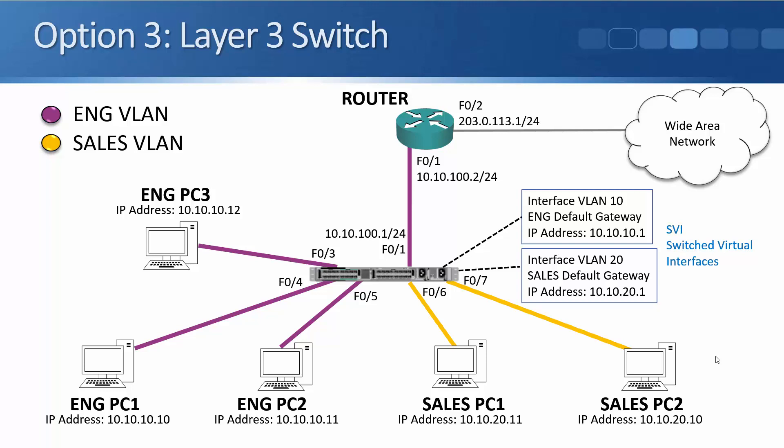With the first two options we covered, an external router was used. With this option, we're going to do the routing on the switch itself. To do that, you can't use a lower-end layer 2 only switch — it has to be a layer 3 switch capable of doing routing. When you have that, the switch doesn't use a physical interface for routing; it uses a virtual interface — the SVI, a switched virtual interface.